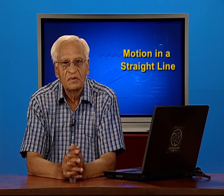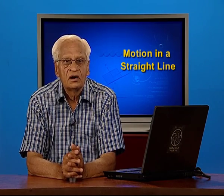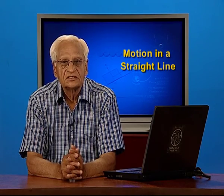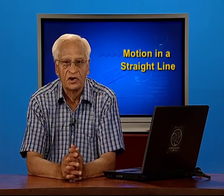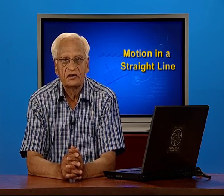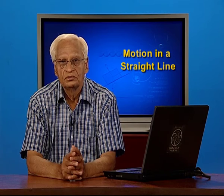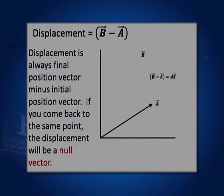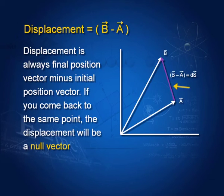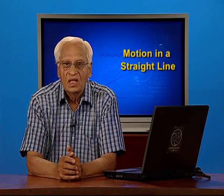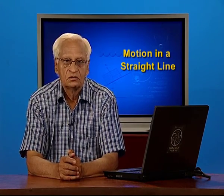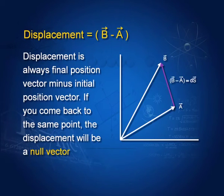We start with displacement. You know already that displacement is the difference between the final position vector of a body and the initial position vector of a body. This is the initial position vector. This is the final position vector and this is the displacement vector B minus vector A. We shall denote displacement by capital S with an arrow on it, whereas the distance covered we shall show by small s.